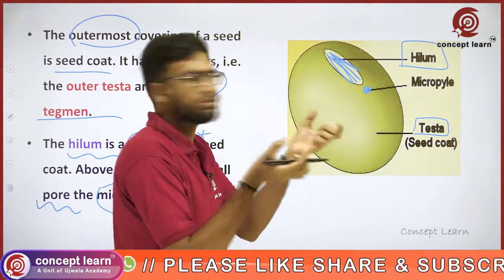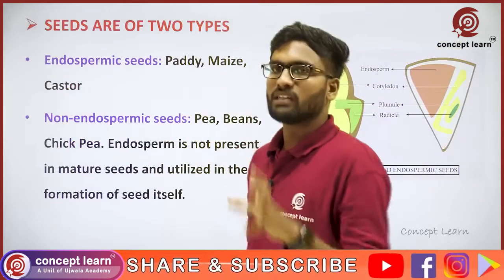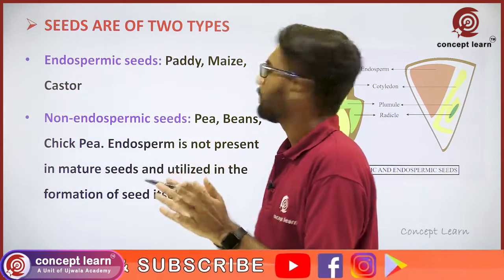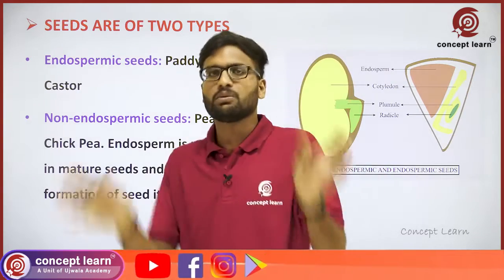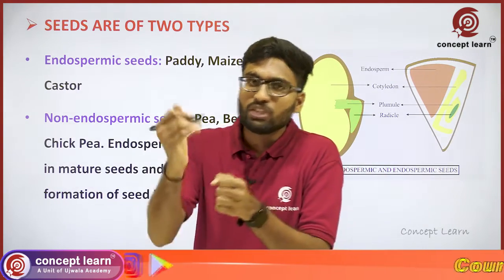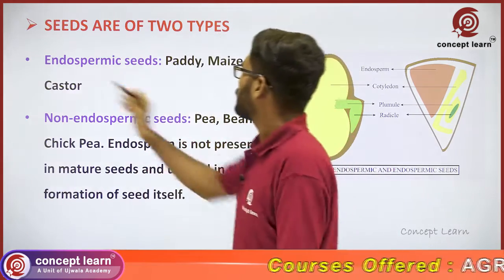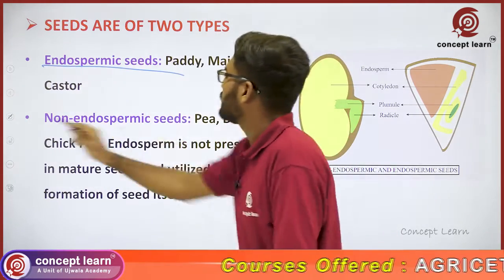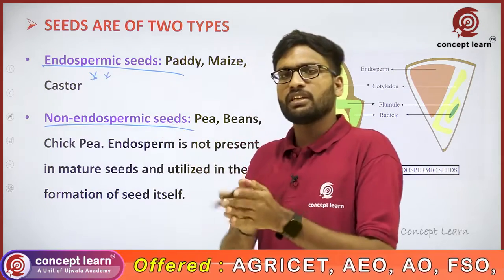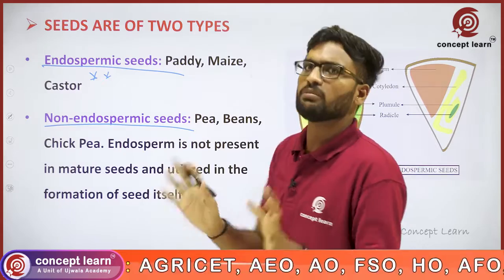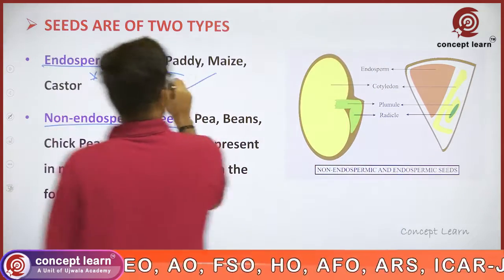Seeds are of two types based on the presence of endosperm in the mature seed: endospermic seeds and non-endospermic seeds. Endospermic seeds are seeds in which endosperm is present even in mature seeds.